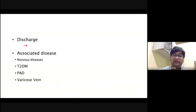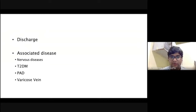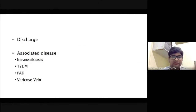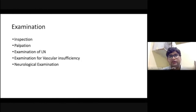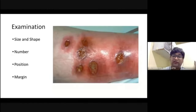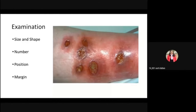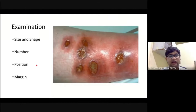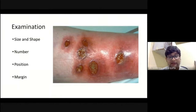You must ask about the discharge — the nature, type, and amount. The nature will be whether it is serous, serosanguinous, or purulent. You must inquire about associated diseases like neurological problems, tabes dorsalis, diabetes, peripheral arterial disease, or varicose veins. The position of the ulcer is also important — venous ulcers are usually in the lower limb in the gaiter's area. After ascertaining the position, you will see how the margins are.